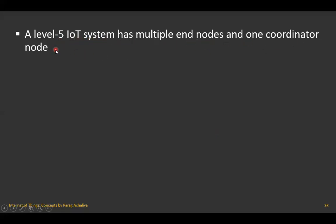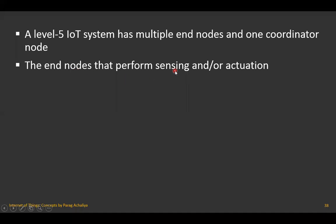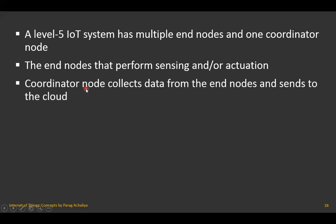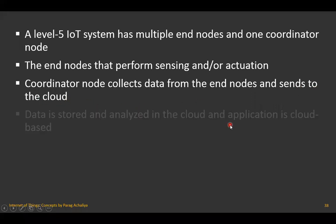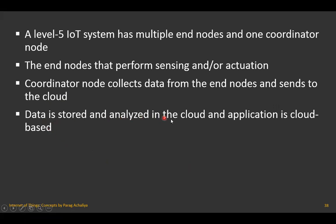A level five IoT system has multiple end nodes and one coordinator node. All end nodes perform sensing and actuation tasks. The coordinator node collects data from the end nodes and sends that data to the cloud storage or cloud database. Data is stored and analyzed in the cloud, and the application is again cloud-based. All analysis is also performed on the cloud side.